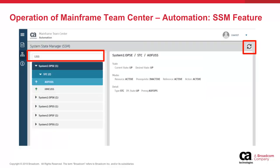Also available on the SSM page is the ability to narrow down the accordion resources by name and refresh the accordion and resource data. The search box above the accordion allows you to narrow the focus of the accordion by resource name. When you type a resource name or part of a resource name in the box, the accordion only shows resources whose name contains the typed search text. Here the search text is USS, so the accordion only shows resources whose name contains the text USS. The numbers in parentheses also change to reflect the narrowed table and resource scope. We can see that the table named STC under OPSE on System 1 has two resources with names containing USS: AOF USS and HMC USS.